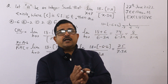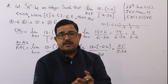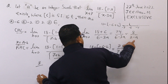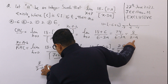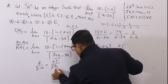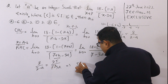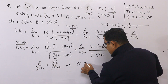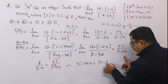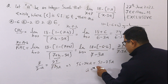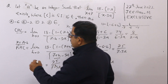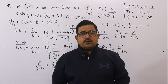अब LHL = RHL equate करते हैं: 8 upon (2 minus a) = 25 upon (7 minus 3a)। Cross multiply करने पर: 56 minus 24a = 50 minus 25a। Solve करने पर a = 50 minus 56 = minus 6। तो a की value है minus 6, और यहाँ पे minus 6 option correct हो जाता है।